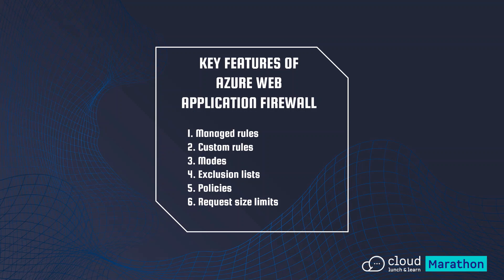The second feature is custom rules. If the managed rules offered by the Web Application Firewall do not cover a specific threat to your web application, you can create your own custom rule. The next feature is WAF mode. Azure WAF can operate in two modes: detection mode, which logs requests that violate a rule, and prevention mode, which logs and blocks requests that violate a rule.